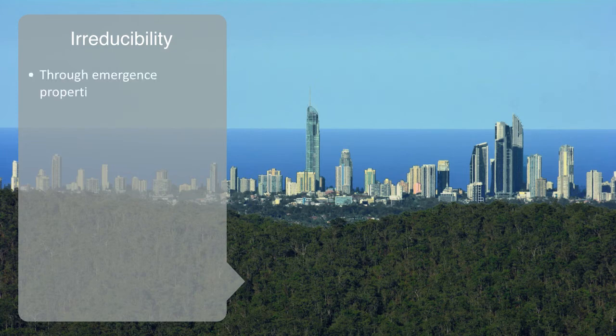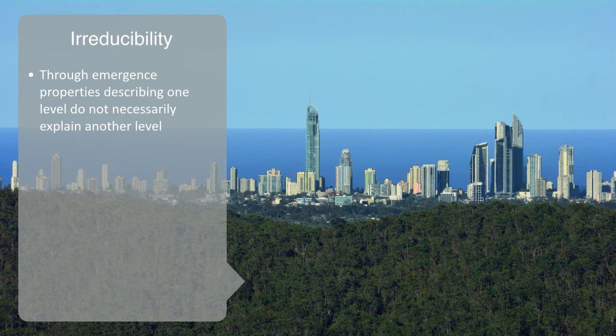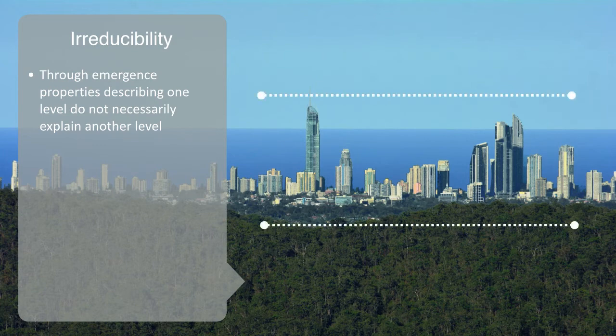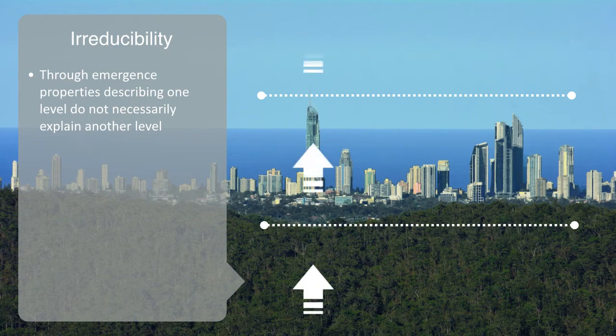Through emergence, and phase transitions, properties describing one level of a complex system, do not necessarily explain another level, despite how intrinsically connected the two may be. At each level of complexity, new laws, properties, and phenomena arise, with their own internal dynamics, that are specific to that level of organization, and can't be reduced,